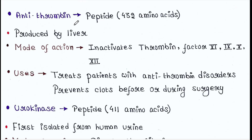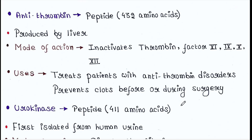Next is antithrombin. It is a peptide which has 432 amino acids and is produced by the liver. Mode of action: it inactivates thrombin, factor 11, factor 9, factor 10, and factor 12. Uses: it treats patients with antithrombin disorders and prevents clots before or during surgery.